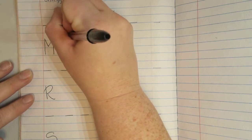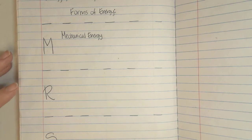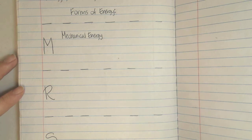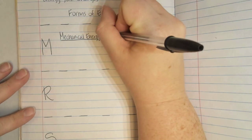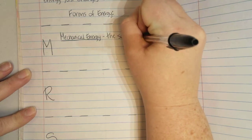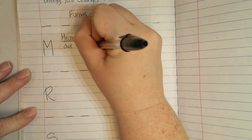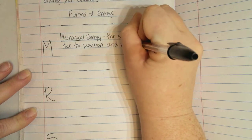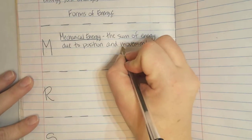So the first form of energy that starts with an M is called mechanical energy. So we're going to define that first. Mechanical energy. If you think about the word mechanical or mechanics, oftentimes think of a mechanic as someone who might work on cars or motors or generally what that boils down to is things that move. So mechanical energy is going to be energy that has to do with movement.